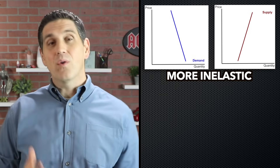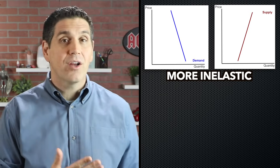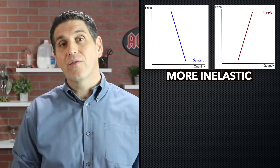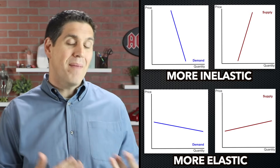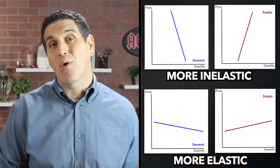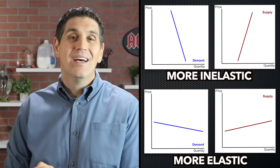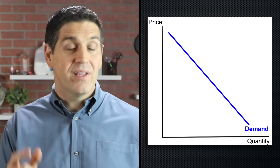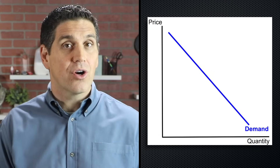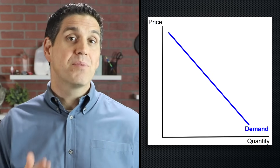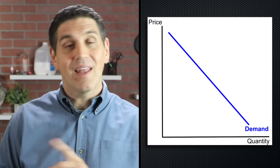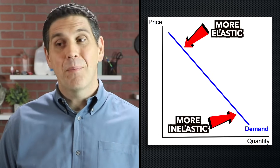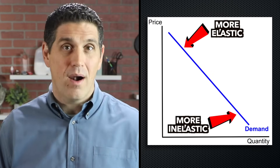In general, a steeper demand curve and supply curve is more inelastic, and a flatter demand and supply curve is more elastic, but it depends on the actual numbers. The same demand curve with the same slope can have different elasticity depending on where you are. So the point here is elasticity is not the same as slope.